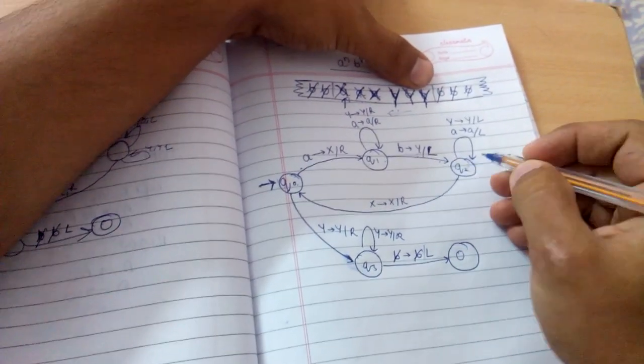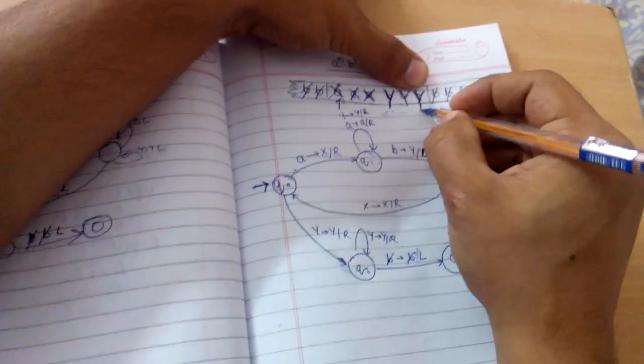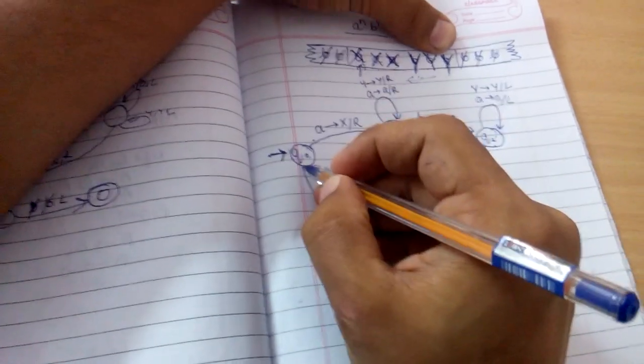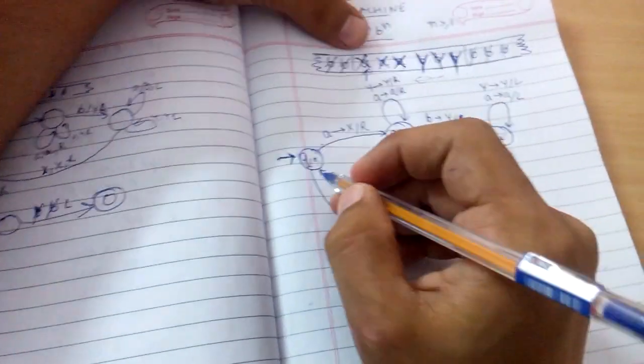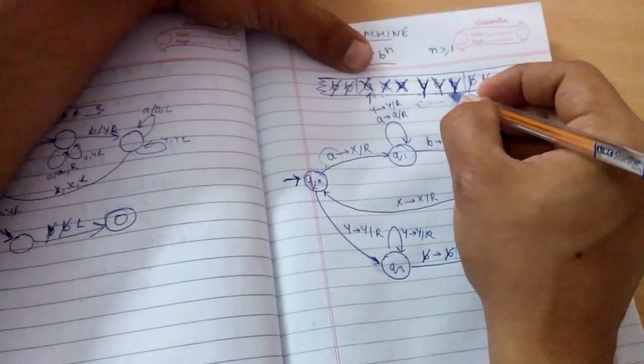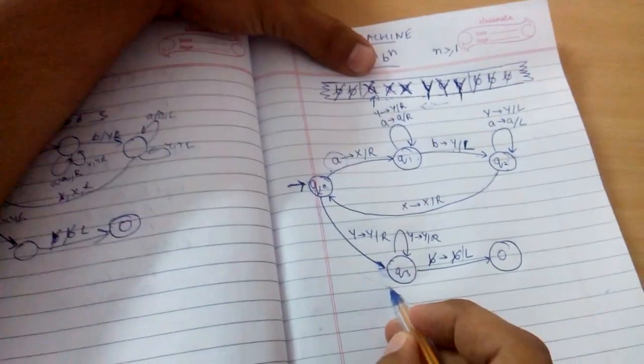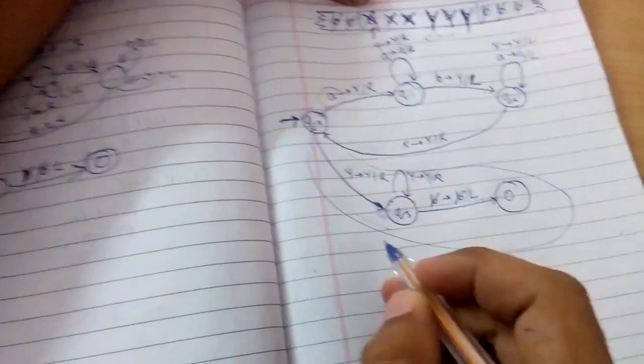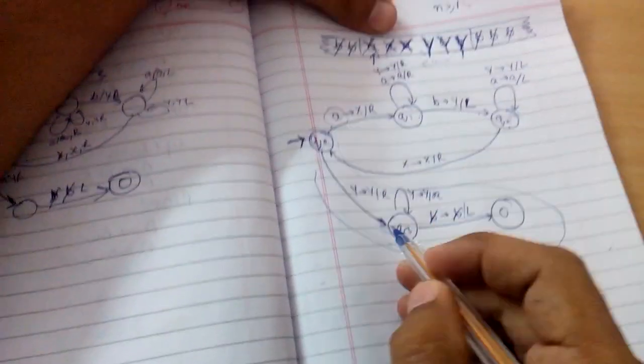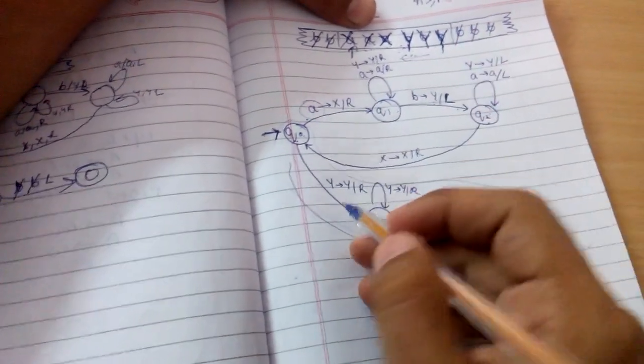Then we go all the way back to the left. Since there is no 'a' remaining - only x's and y's - this condition is satisfied. This portion comes into work, and we scan the y's.